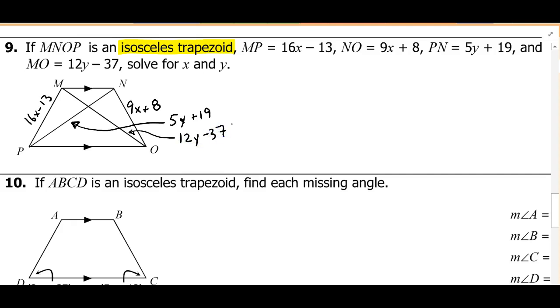All right, so if we recall properties of an isosceles trapezoid, these legs are going to be congruent, and these diagonals are also going to be congruent. So let's go ahead and set up a couple equations and solve them. We just need to solve for x and y.